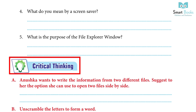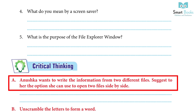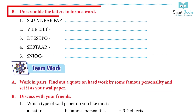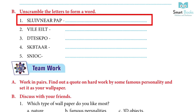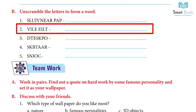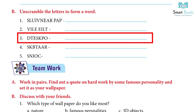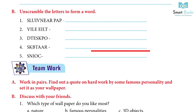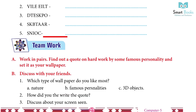Critical Thinking: A. Anushka wants to write information from two different files. Suggest to her the option she can use to open two files side by side — Answer: Do it yourself. B. Unscramble the letters to form a word — Answers: 1. Universal app. 2. Lifetime. 3. Desktop. 4. Taskbar. 5. Icons.